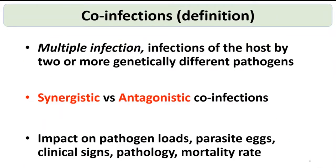First, we would like to identify the definitions of co-infections. Co-infections, or multiple infections, mean the infection of the host by two or more genetically different pathogens. These co-infections end up in two different scenarios: synergistic co-infections, where two or more pathogens facilitate or promote each other to cause disease and make the disease outcome more severe; and antagonistic co-infections, where one pathogen may antagonize the other or stimulate the host immunity, making the environment less favorable for another pathogen.